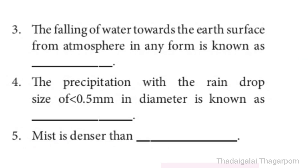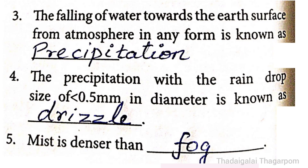3rd one: The falling of water towards the earth's surface from the atmosphere in any form is known as — The answer is Precipitation. The falling of water towards the earth's surface from the atmosphere in any form is known as Precipitation.